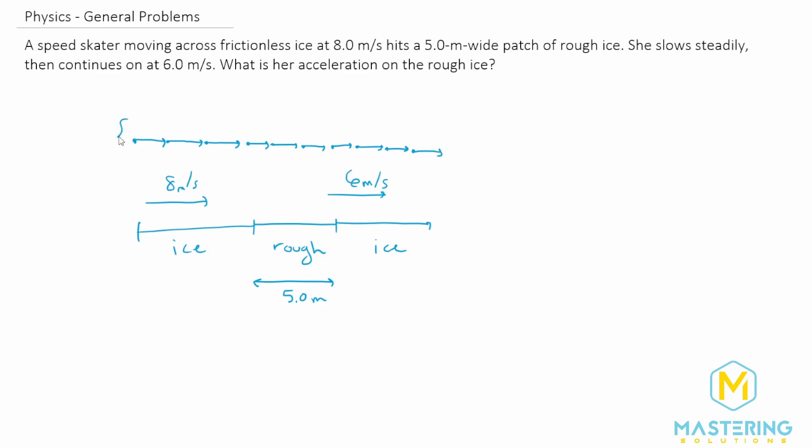So this section right here is the position and velocity vectors for the situation: going at a constant speed, slowing down during the rough ice, and then continuing again at a constant but slower speed along the ice after the rough ice.